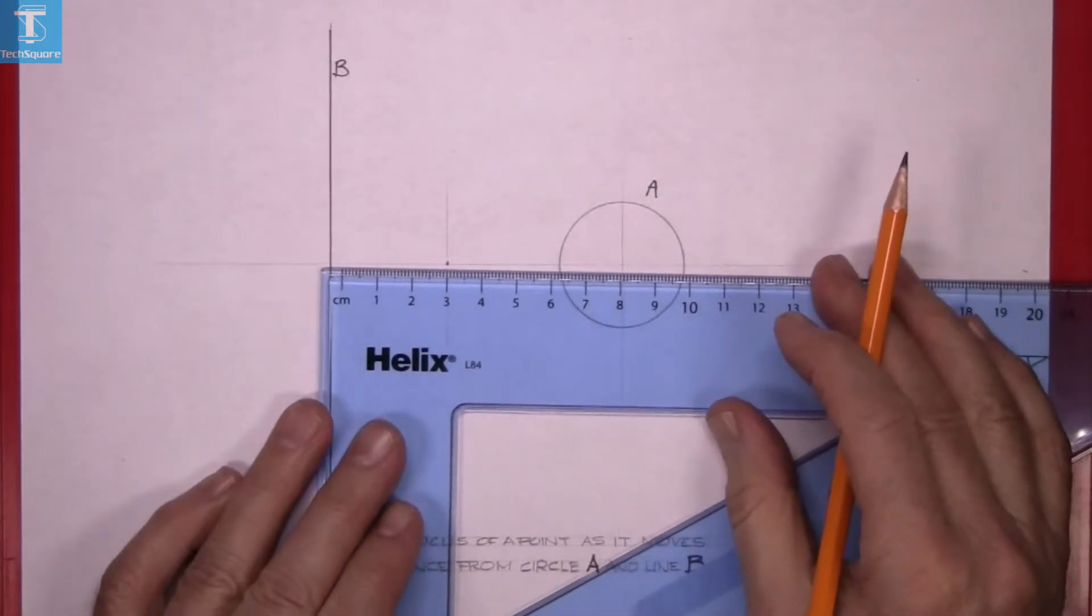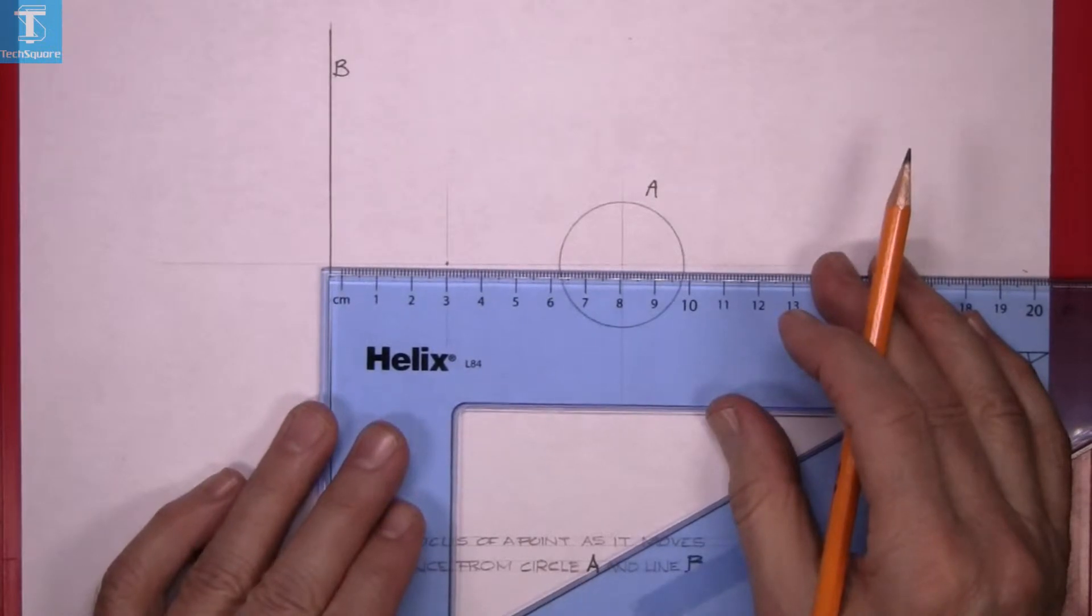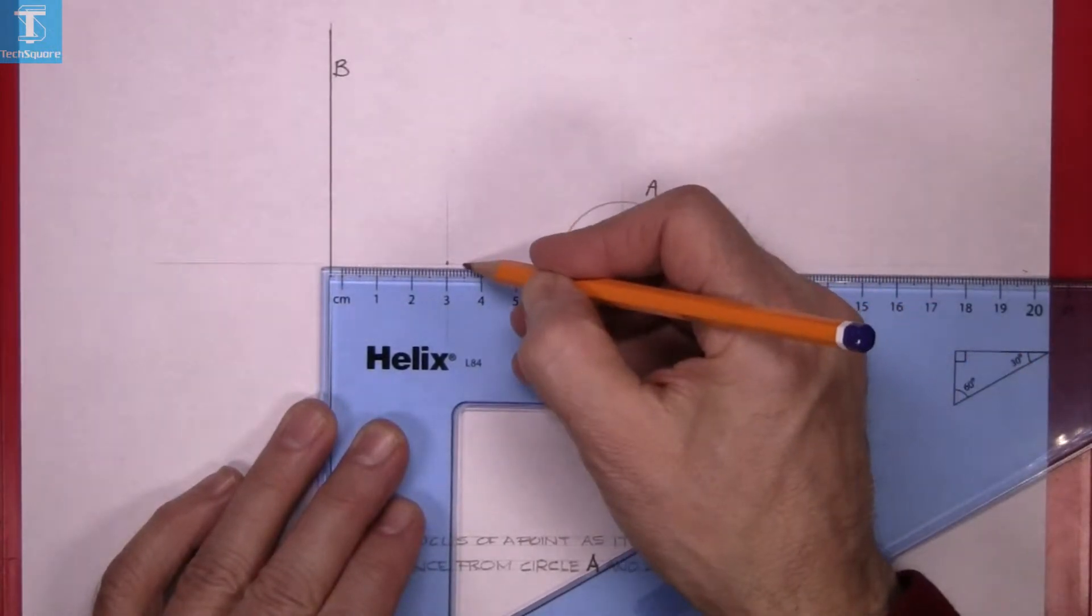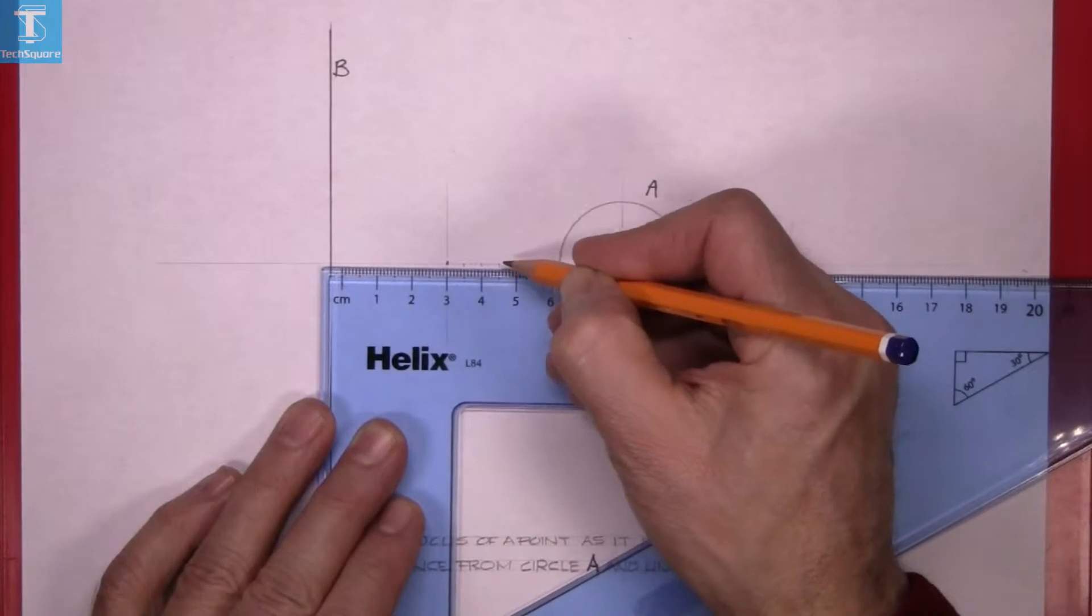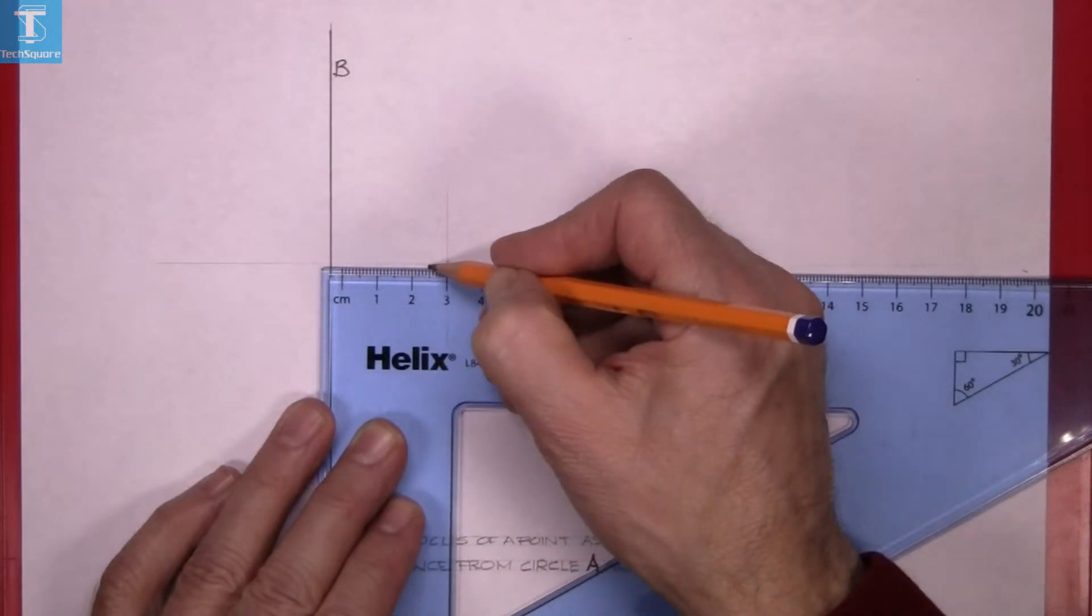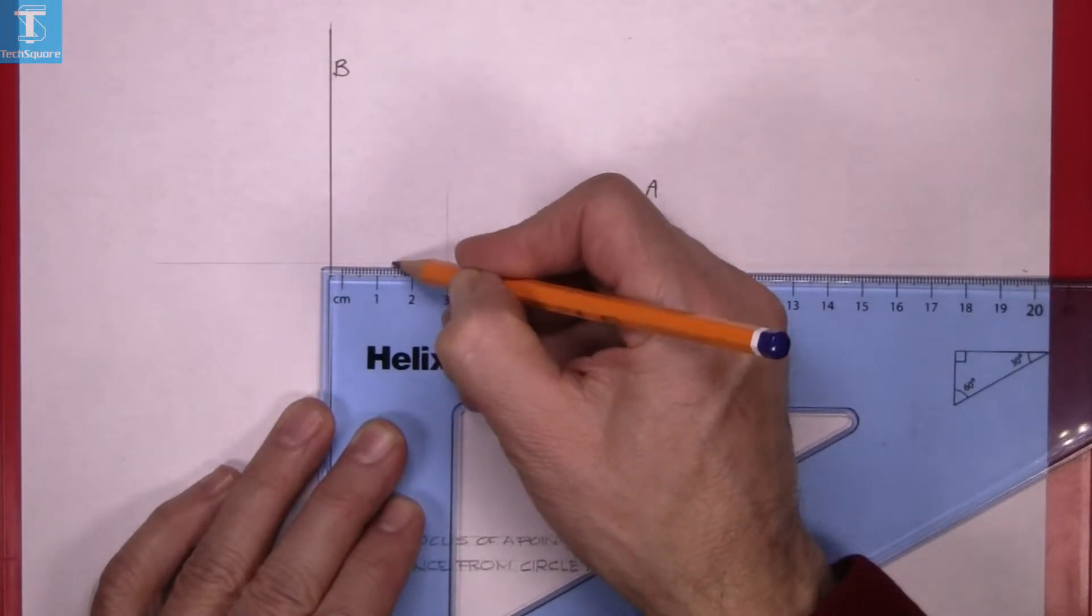Measure five millimeters each side of the midpoint, and then set five millimeters each side back towards B.